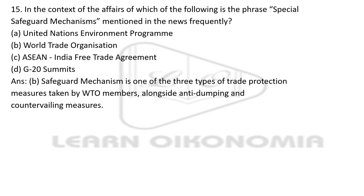The final question: the Special Safeguard Mechanism has been mentioned in the news frequently in the context of which of the following? Options are: United Nations Environment Program, World Trade Organization, ASEAN-India Free Trade Agreement, and G20 Summits. The right answer is WTO. The safeguard mechanism is one of three types of trade protection measures under the WTO, implemented alongside anti-dumping and countervailing measures.